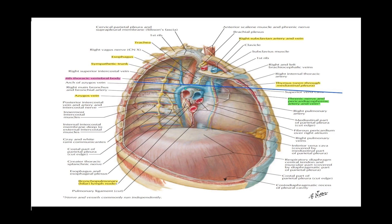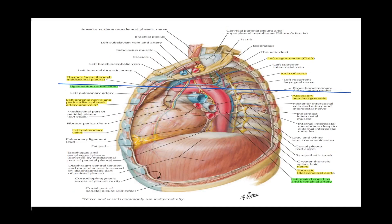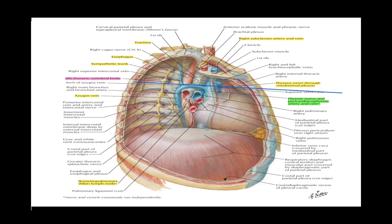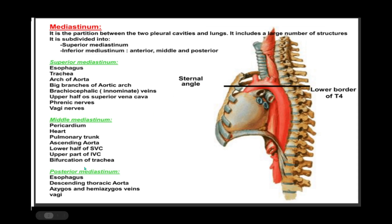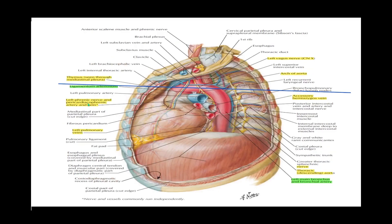This is the right side of the mediastinum; the left side is almost the same with a slight difference in the structure of the bronchial hilum. Looking here, you can also see the vagus nerve coursing behind the hilum of the lung — the left vagus nerve, cranial nerve ten — in the posterior mediastinum.